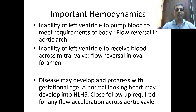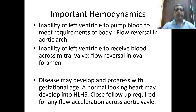The important hemodynamic features of hypoplastic left heart syndrome are the inability of the left ventricle to pump blood to the body's requirements, resulting in flow reversal observed in the distal aortic arch. The left ventricle is also unable to receive blood through the mitral valve, so atrial pressure increases and there is flow reversal in the foramen ovale. Normal foramen ovale flow is from right atrium to left atrium; in hypoplastic left heart, it is from left atrium to right atrium.